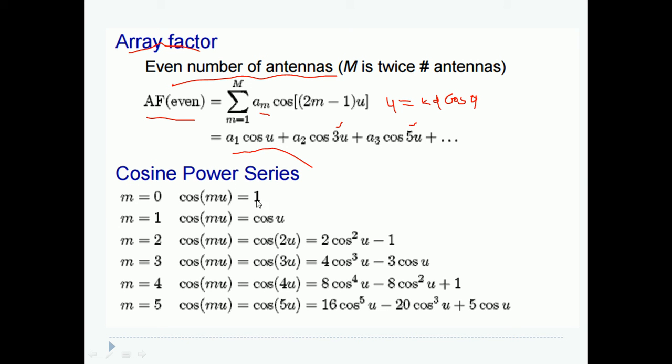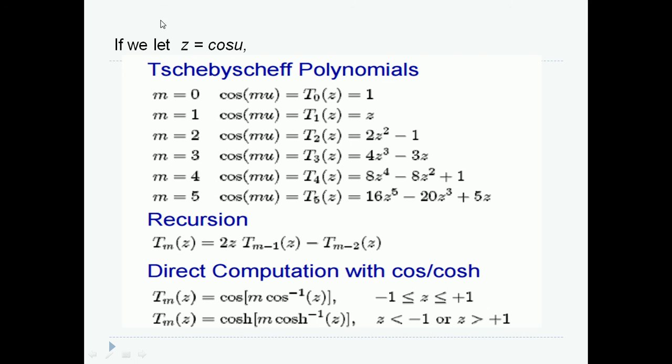On the other hand, we have cosine power series which are similar to this form. When M equals 0, cos(MU) equals 1, and when coefficient M equals 1, cos(MU) equals cos U. When M equals 2, this will be like a generalized equation of cos(2 theta) which is nothing but 2 cos squared theta minus 1. Likewise, we can go up to N.